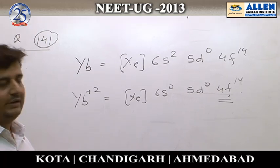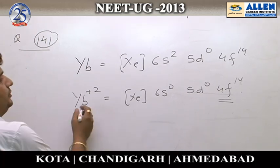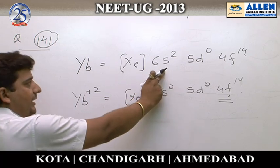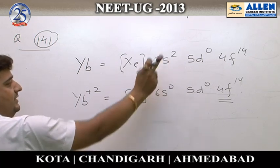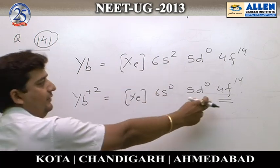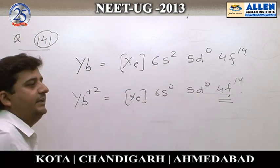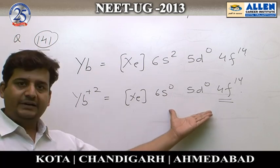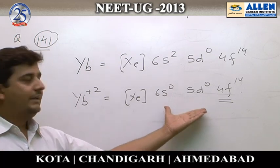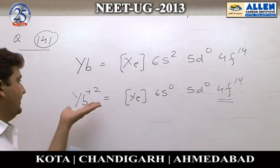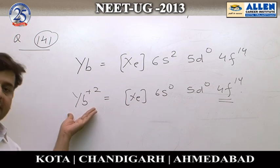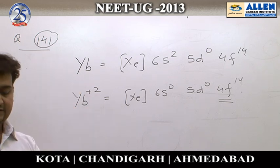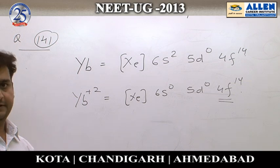When we write the configuration of Yb²⁺ ion, we remove 2 electrons from the outermost shell — that is 6s². The remaining configuration has no unpaired electrons left, which means this ion is diamagnetic. Therefore, for question number 141, the answer is option 1.